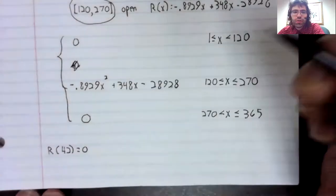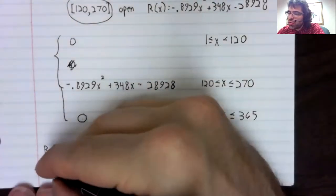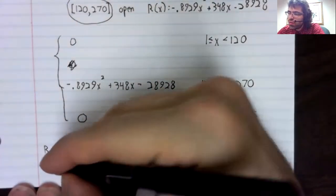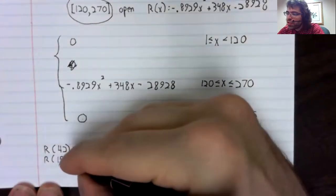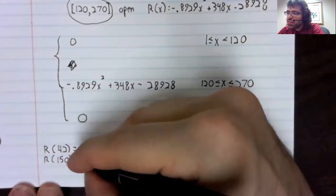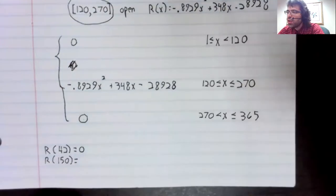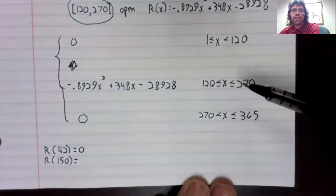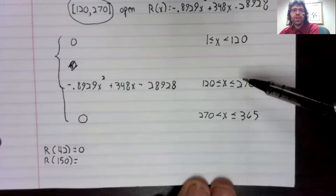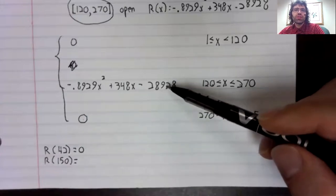If, on the other hand, I wanted to know R of 150, 150 is between 120 and 270, so we'd use this equation.